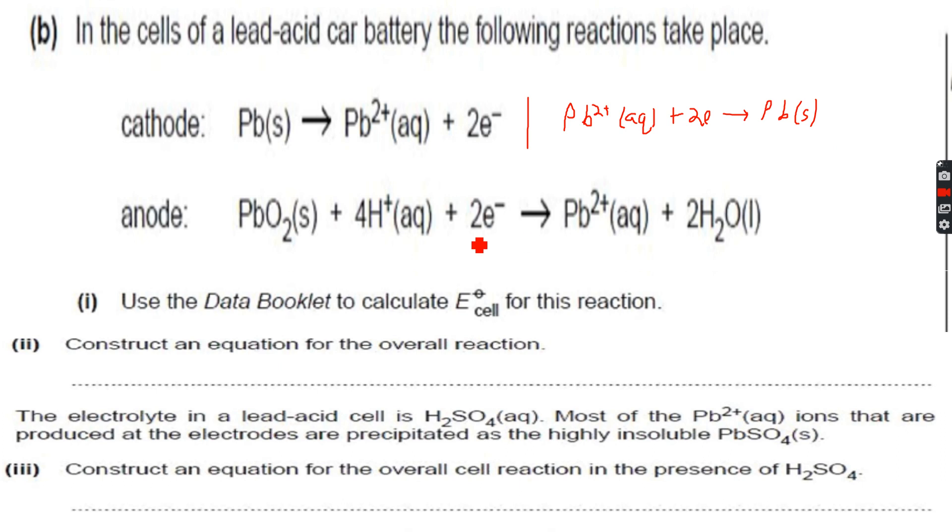Use the data booklet to calculate E°cell for this reaction. For Pb2+, the value is -0.13 volts. For the anode reaction, the data booklet gives +1.47 volts.